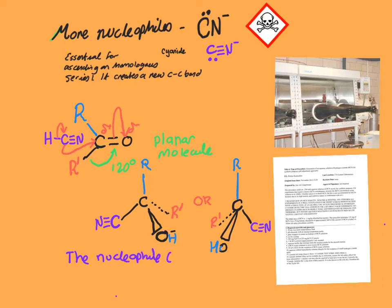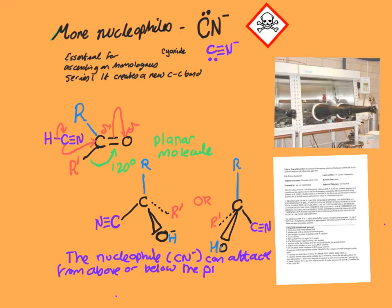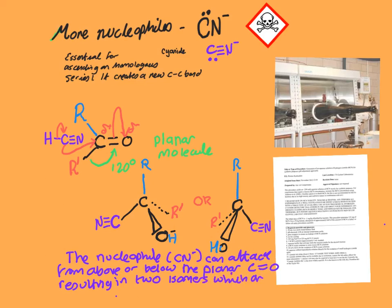Because this is a planar molecule, the nucleophile — in this case the cyanide ion — can attack from above or below the plane of the carbonyl group. What you end up with is a mixture of two molecules which look identical but are actually mirror images of each other. So the nucleophile, because it can attack from above or below the planar carbonyl group, results in two isomers which are mirror images of each other. We're going to have a look at a three-dimensional representation of them in a moment.